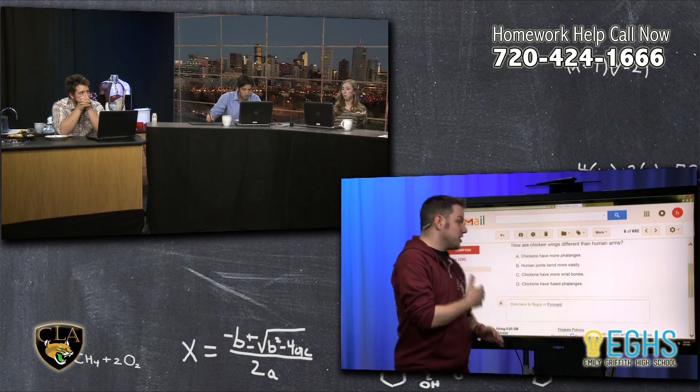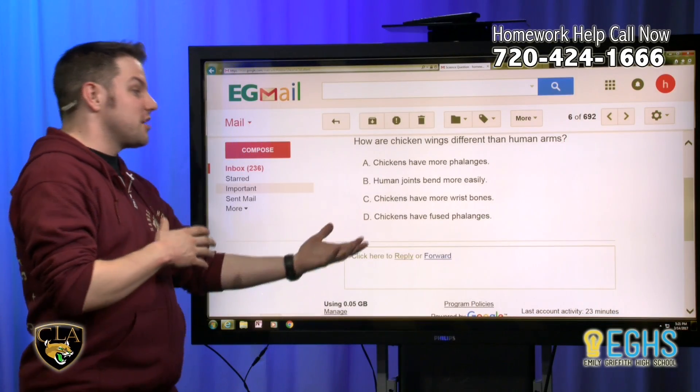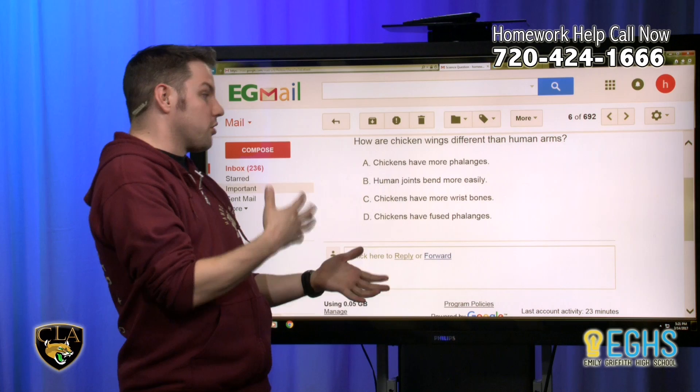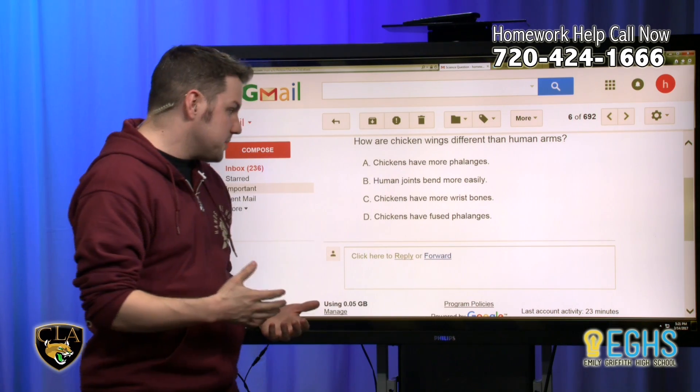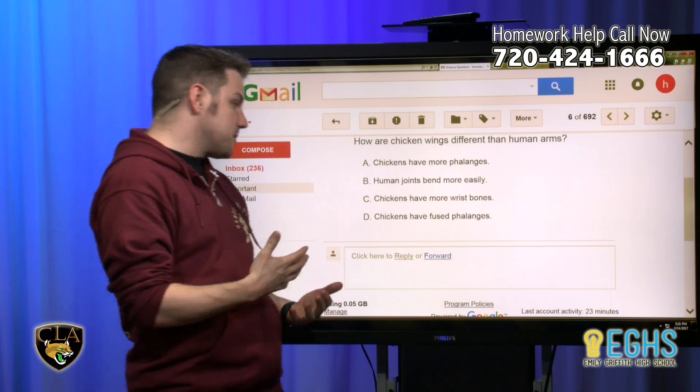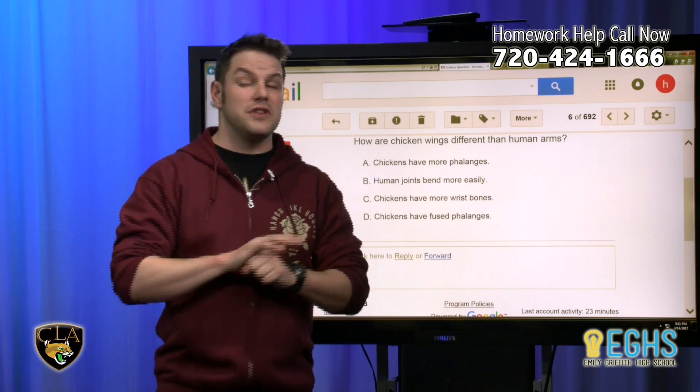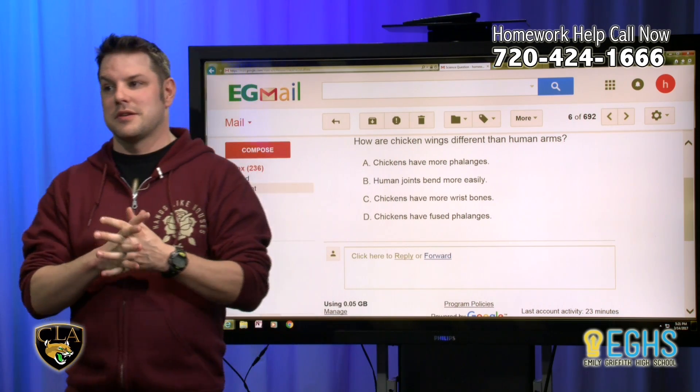How are chicken wings different than human arms? The options are: chickens have more phalanges or fingers, human joints bend more easily, chickens have more wrist bones, or chickens have fused phalanges. Yeah, that's a great question. So I think let's just start by talking about what phalanges are.